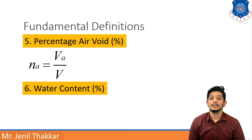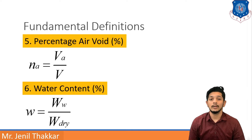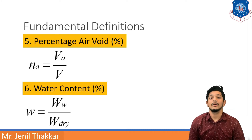The next definition is Water Content, also expressed as a percentage and denoted by small w. It is defined as the weight of water to the weight of dry soil. In some literature it is also defined as the ratio of mass of water to mass of dry soil — ultimately both are the same. As it is expressed as a percentage, it is multiplied by 100.